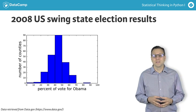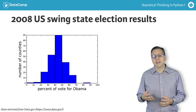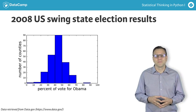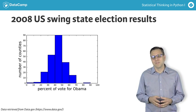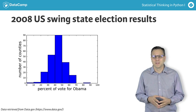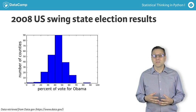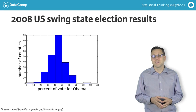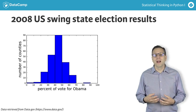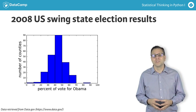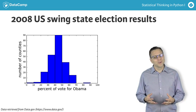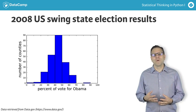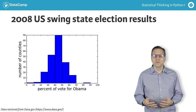The height of each bar is the number of counties that had a given level of support for Barack Obama. For example, the tallest bar is the number of counties that had between 40% and 50% of its votes cast for Obama. Right away, because there is more area in the histogram to the left of 50%, we can see that more counties voted for Obama's opponent, John McCain, than voted for Obama. Just by making one plot, we could already draw a conclusion from the data.